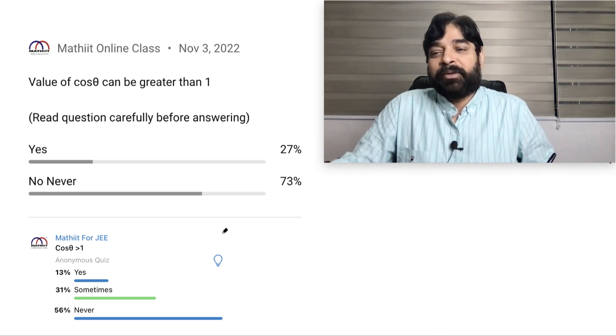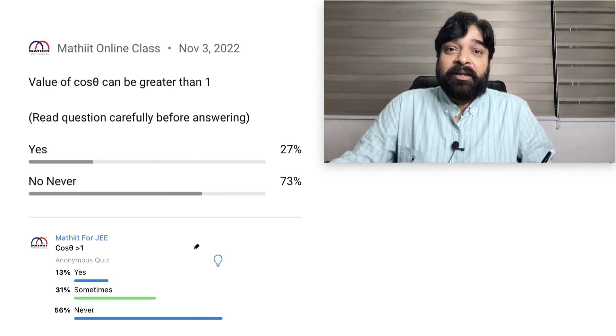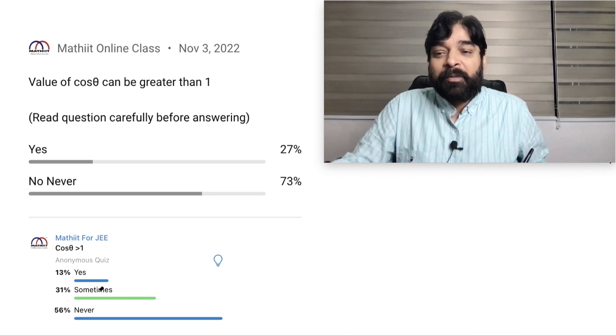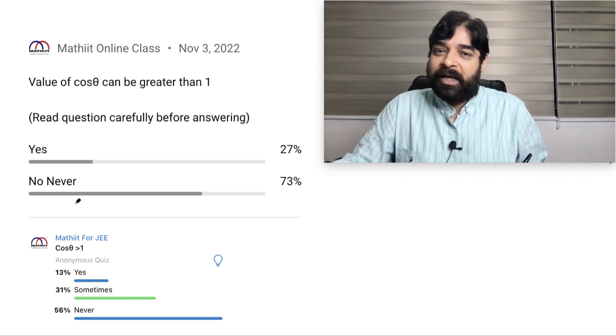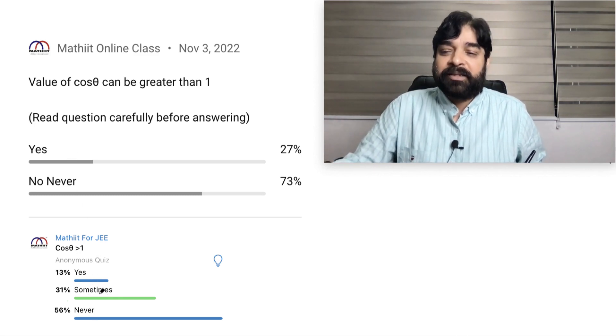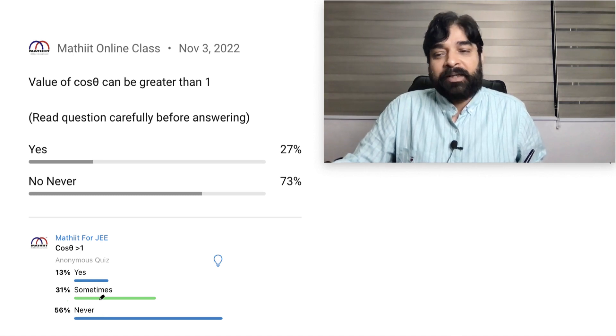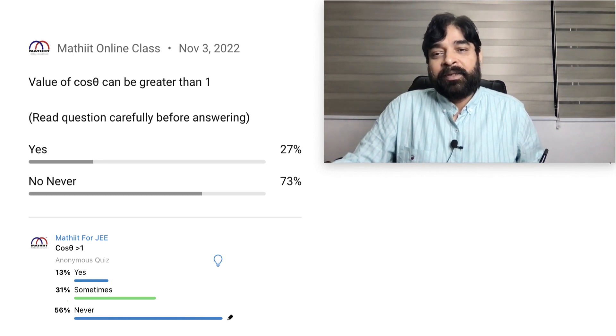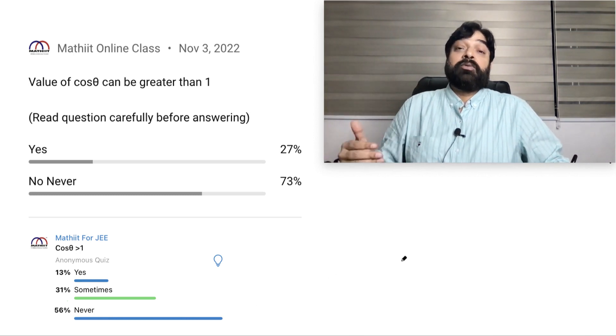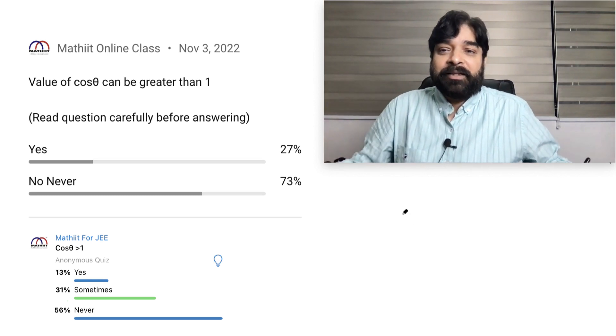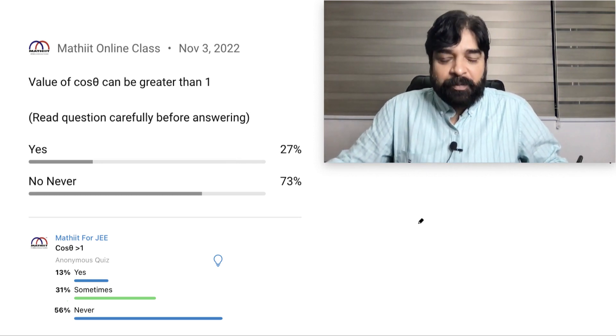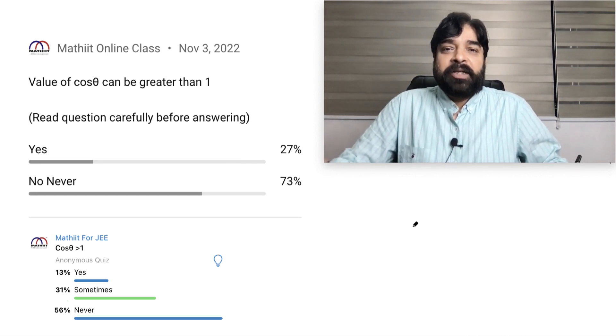I was really surprised at the answer they are giving. When we got this kind of data, I said okay let's put it on the telegram channel where so many people are there. We gave three options: yes, sometimes, never. And there also you can see never got so many votes. Some people are thinking, tell me what is the answer? Yes, cos θ can be greater than one. I will prove it right now.